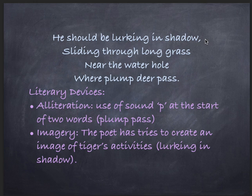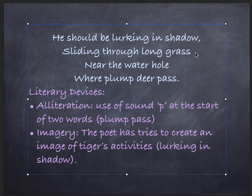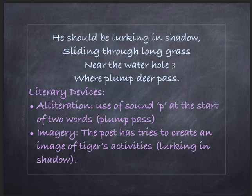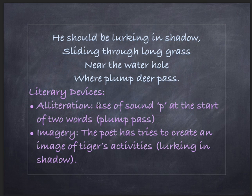Now we move to the second stanza. The poet says that the tiger should be lurking in shadow somewhere in the forest, sliding through long grass as it does when about to attack its prey. Near the water hole, the tiger would go near water points where other animals come to quench their thirst, and where plump deer pass to drink water — the tiger waits to hunt them. The literary device here is alliteration — repetition of the consonant sound 'P' in 'plump' and 'pass'.